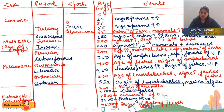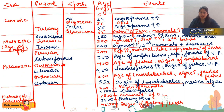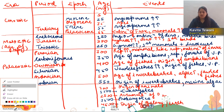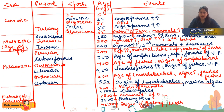In the Oligocene epoch: the first apes were seen. In the Miocene epoch: angiosperms dominated. Miocene is considered the Golden Age of Mammals. In the Pliocene epoch: ape-like ancestors were seen for the first time.